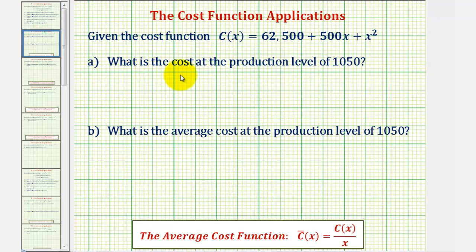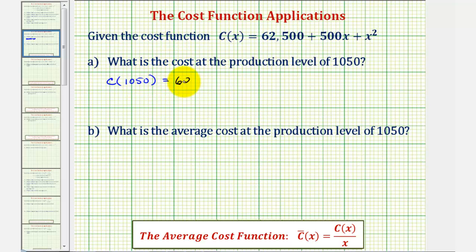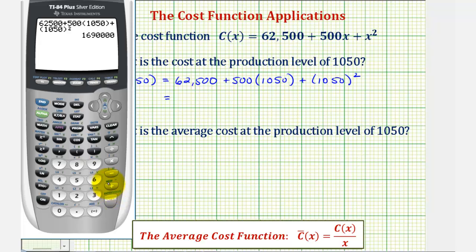To determine the total cost at a production level of 1,050, we evaluate the cost function at 1,050. So c of 1,050 equals 62,500 plus 500 times 1,050 plus 1,050 squared. Evaluating this on the calculator, the total cost would be $1,690,000.